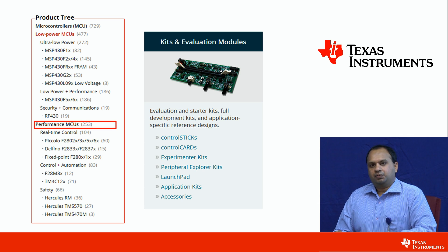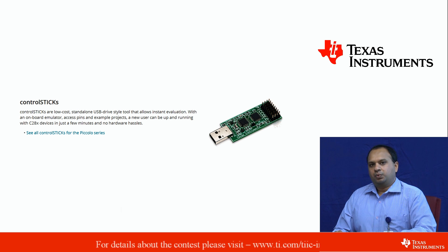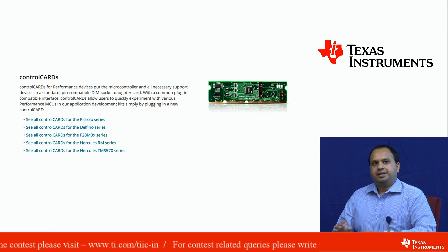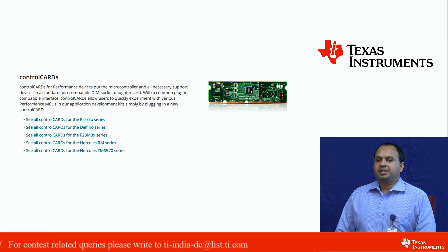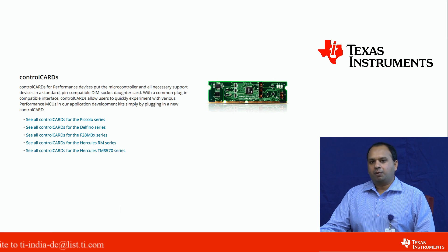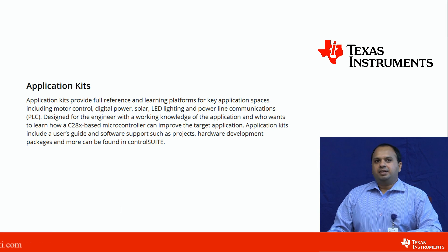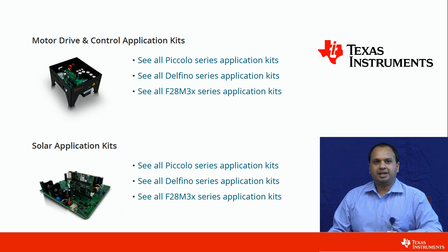Let's move to the second category of MCUs which is Performance MCUs. For the C2000 family, we have different tools like control sticks, which are very similar to the EasyXXX tools — basically a development tool on a USB stick. The second category is the Control Cards, which are DIMM socket form-factor boards with a common plugin-compatible interface that can be plugged into different application boards to evaluate different performance MCUs for the same application. Application kits are available for motor drives, solar applications and digital power supplies.